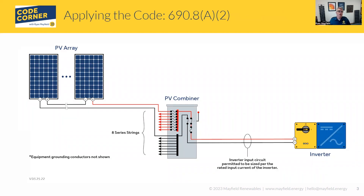One of the key things in that code language is where the circuit is protected by an overcurrent device. As shown in the picture here, we have PV strings and arrays coming into a PV combiner, and we are providing overcurrent protection on that output circuit. We're combining a bunch of input circuits and protecting that output circuit before it goes over to the inverter. What this code is allowing us to do is size that conductor between the combiner and the inverter to what the inverter's maximum current input is.